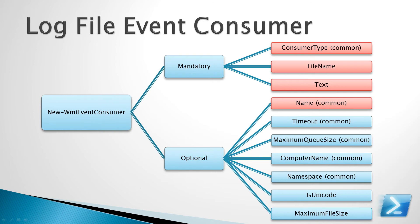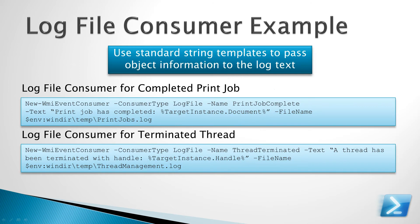Here's the log file event consumer. The log file event consumer is quite simple — you give it a path to a log file that you would like to log text to, you specify the text using WMI standard string templates, and you give it a name. In the examples, we specify the consumer type of log file, give it a friendly name, use the text parameter to specify which text we would like to add to the log file, and then provide a file name. Pretty simple.